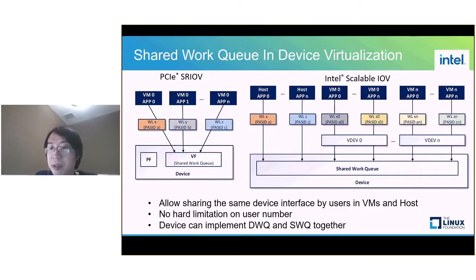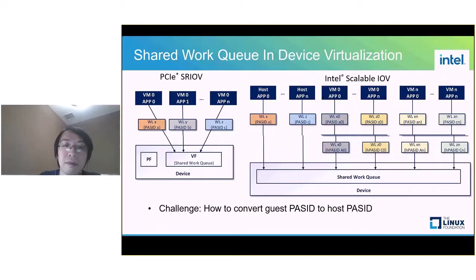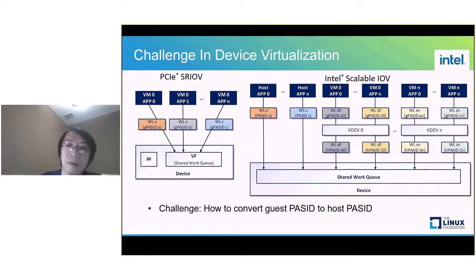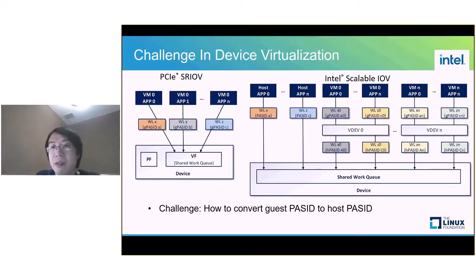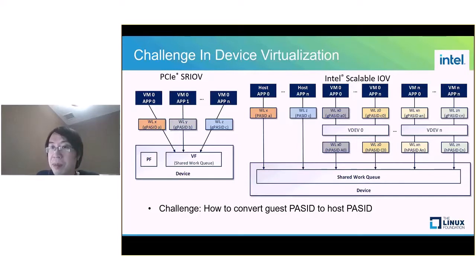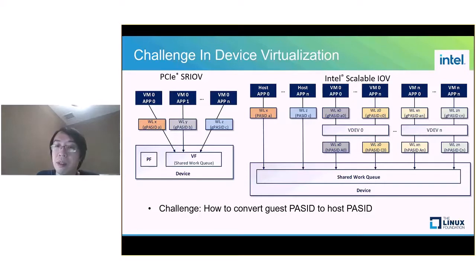One device can implement a dedicated work queue and shared work queue together. The challenge in device virtualization arises when shared virtual addressing SVA is used. For example, users in virtual machines are not aware of the host PASID. Workloads are submitted together with guest PASID IDs, but the device and IOMMU are using the host PASID for DMA operation. So, how do we convert the guest PASID to the host PASID in device virtualization?